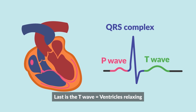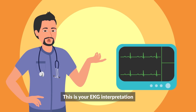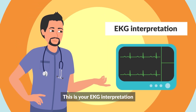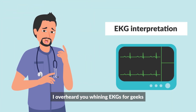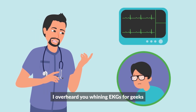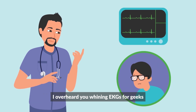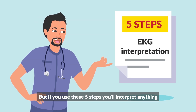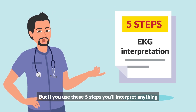Last is the T wave, ventricles relaxing. This is your EKG interpretation. I overheard you whining about EKGs for weeks, but if you use these five steps, you'll interpret anything.